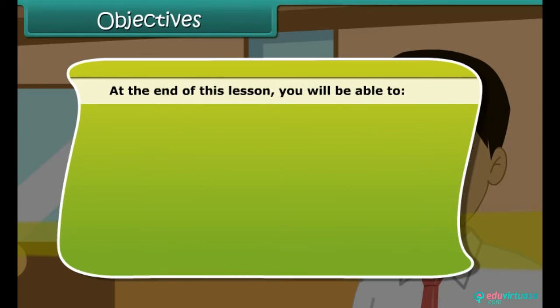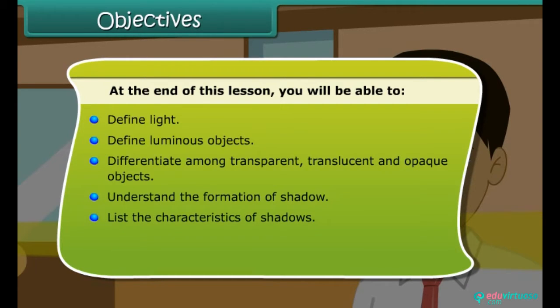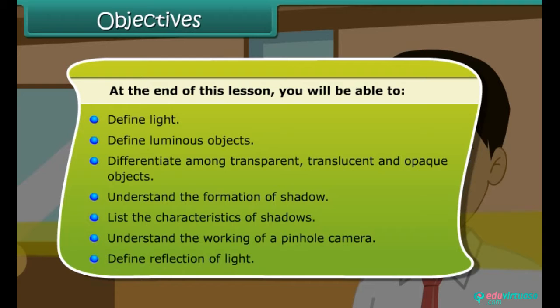At the end of this lesson, you will be able to: define light, define luminous objects, differentiate among transparent, translucent, and opaque objects, understand the formation of shadows, list the characteristics of shadows, understand the working of a pinhole camera, and define reflection of light.